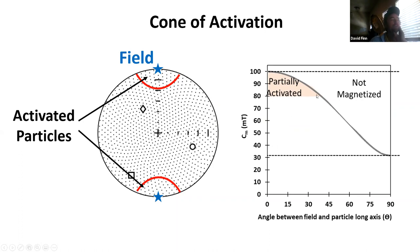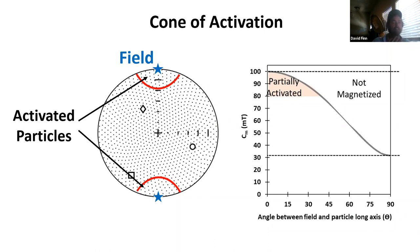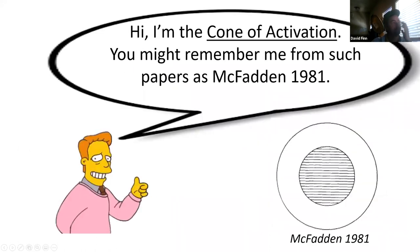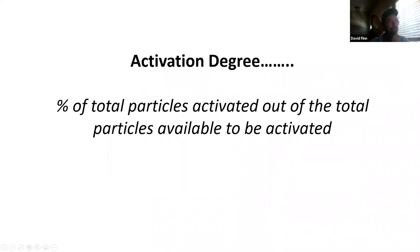The ARM shown here could have been imparted in two ways: one option is by first applying a total ARM up to 100 millitesla and then tumble demagnetizing up to 80 millitesla, or it could be imparted by giving one ARM up to 100 millitesla if the sample's coercivity distribution was entirely restricted to the 80-100 millitesla range. Looking to the left, I show an isotropic distribution of particle long axes on a stereonet, and the red circle — the cone of activation — encompasses all particles that were activated by the field and available to be biased into the ARM.